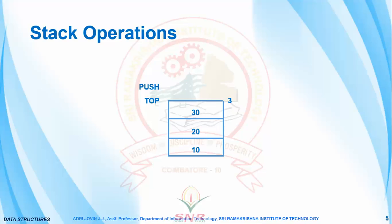Now let us consider a pop operation. The pop always affects the top, which results in the expulsion of 30 from the stack. And now the top comes down to 2.